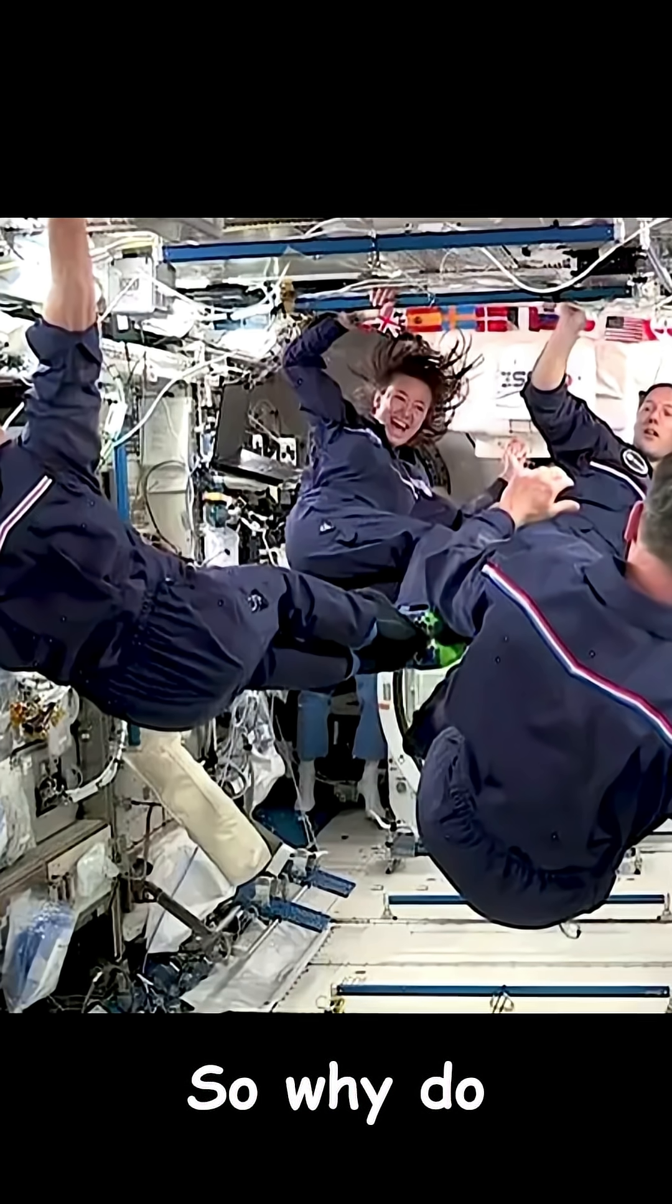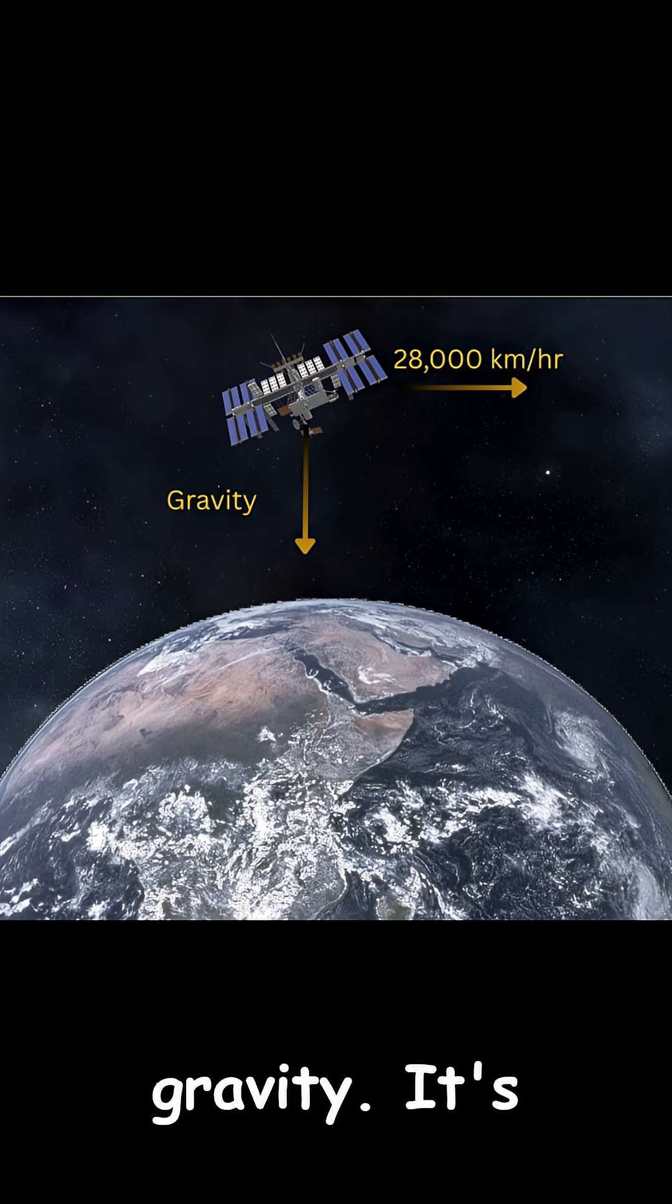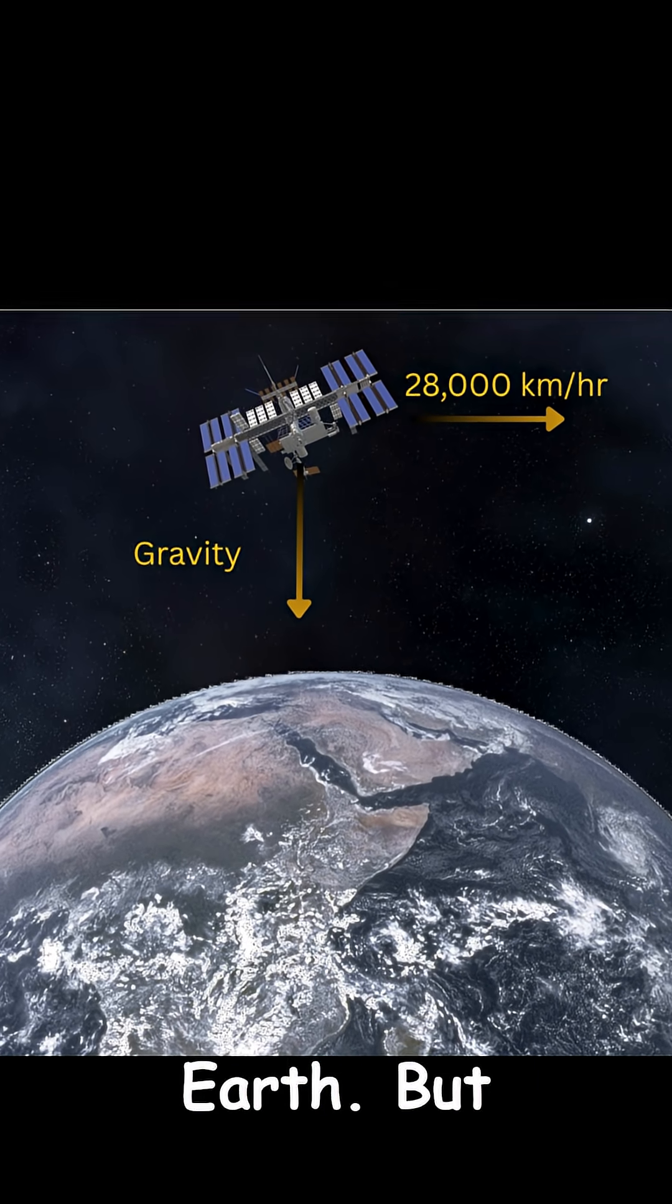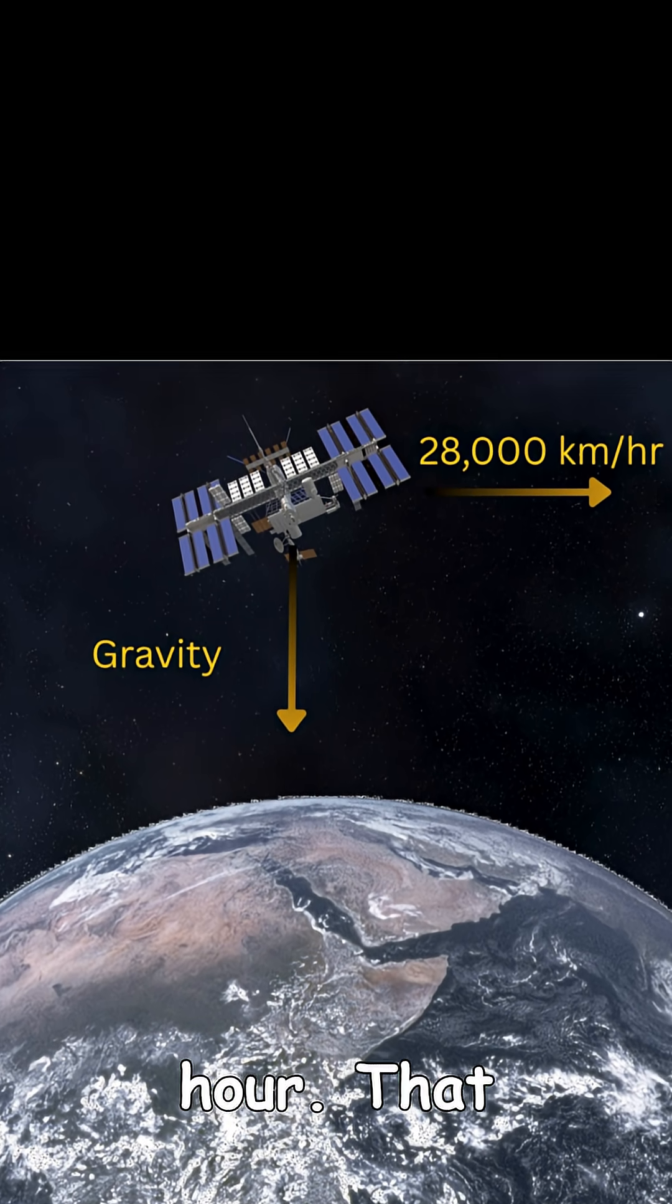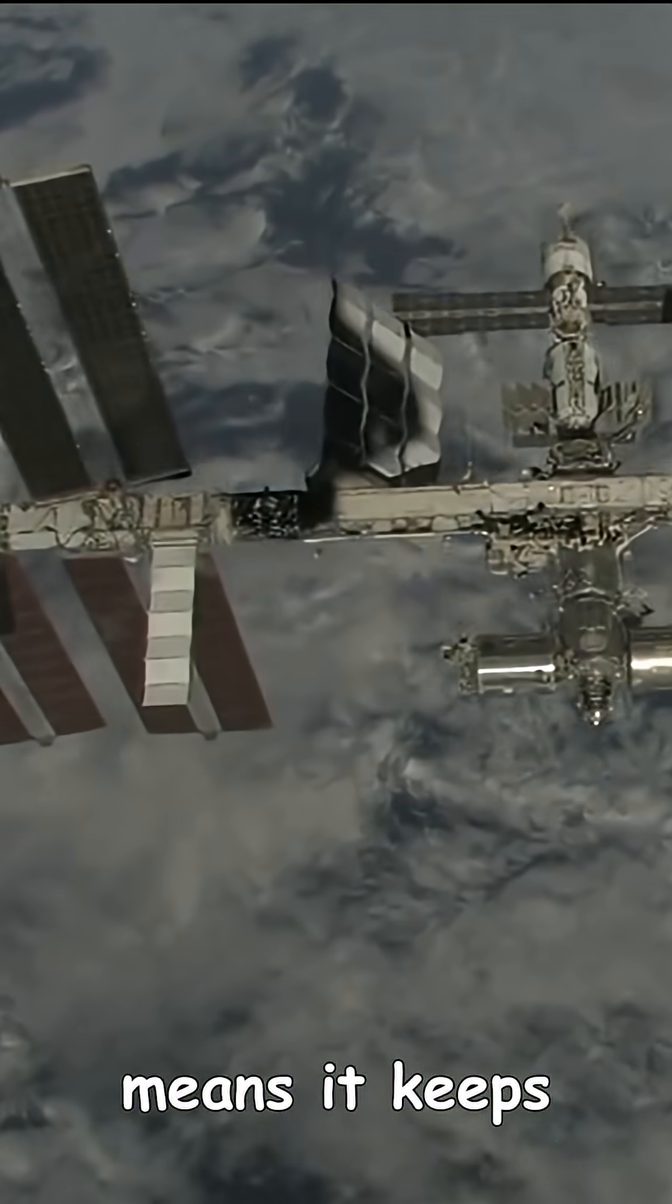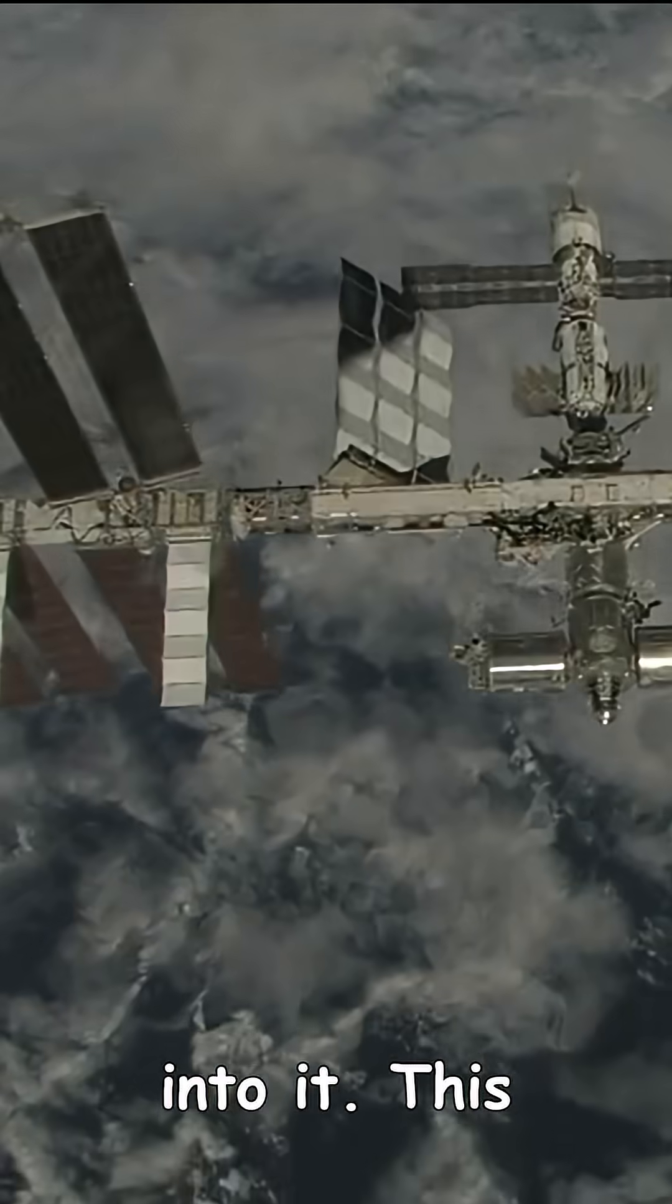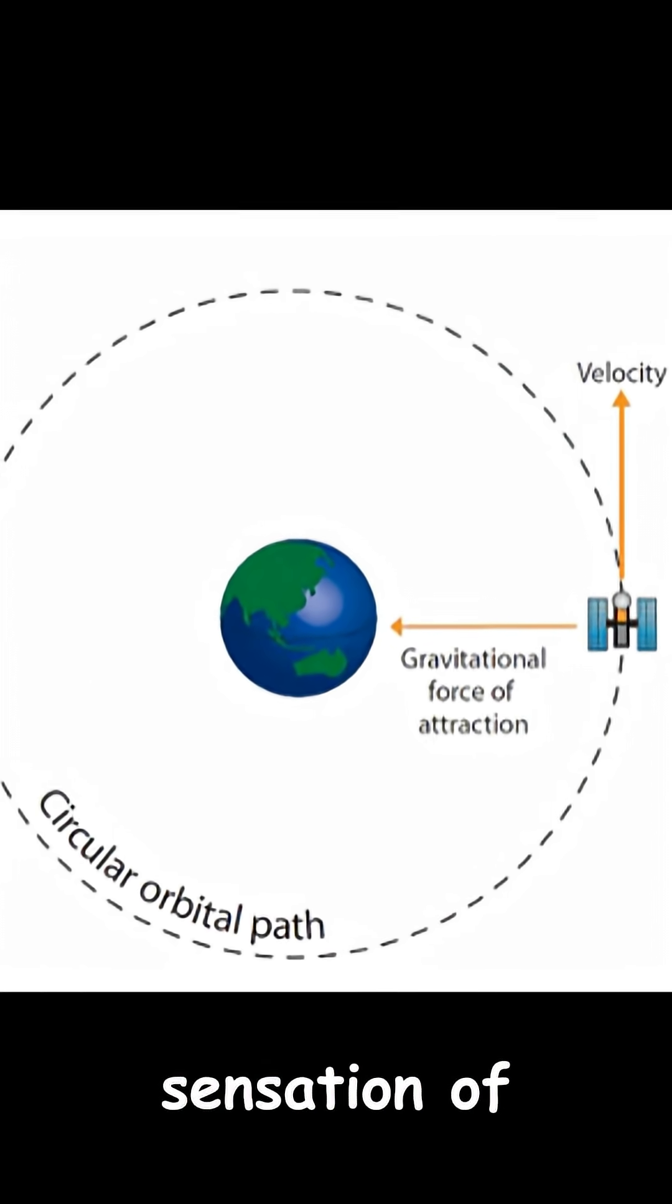So why do astronauts float? It's not because there's no gravity. It's because they're in free fall. The ISS is falling toward Earth, but it's also moving sideways at over 28,000 kilometers per hour. That sideways speed means it keeps missing Earth, falling around it instead of into it. This is called orbital motion, and it creates the sensation of weightlessness.